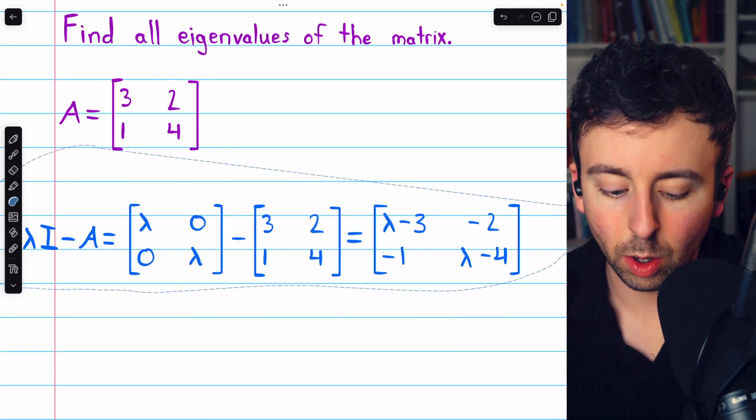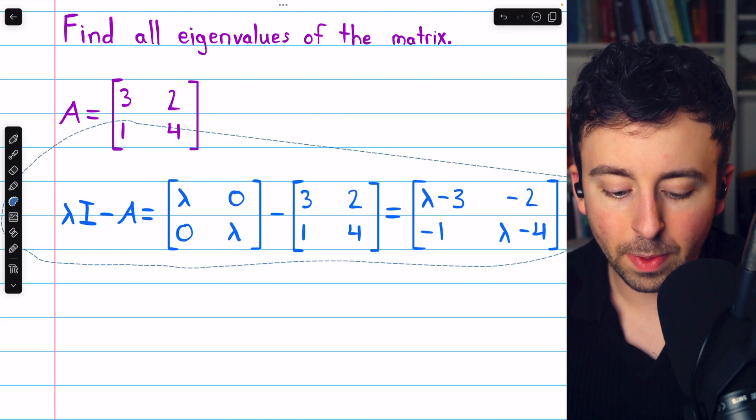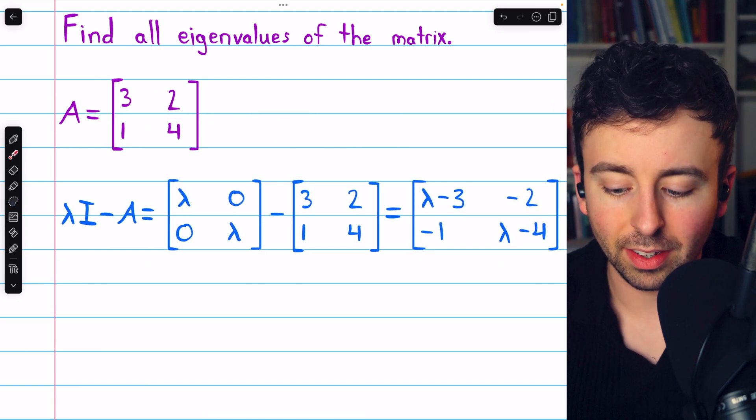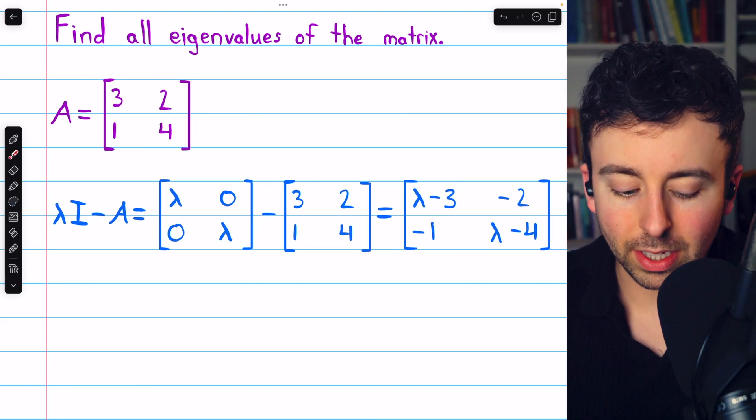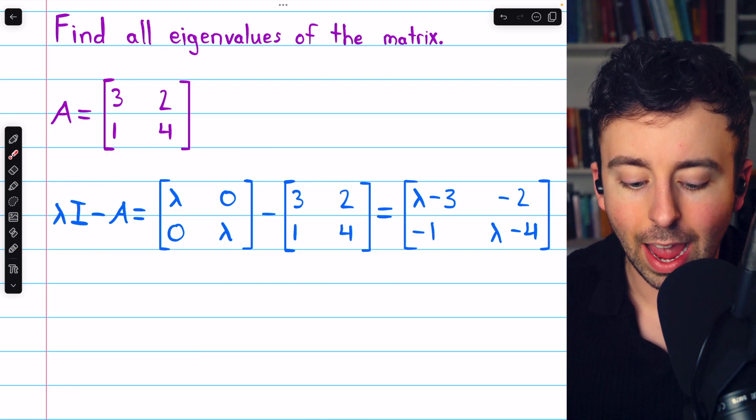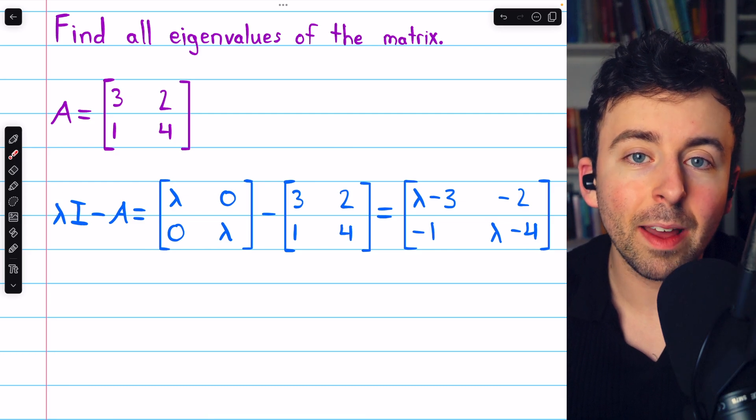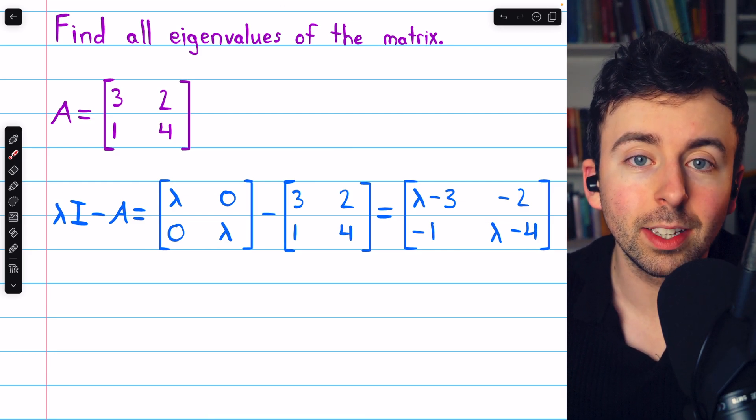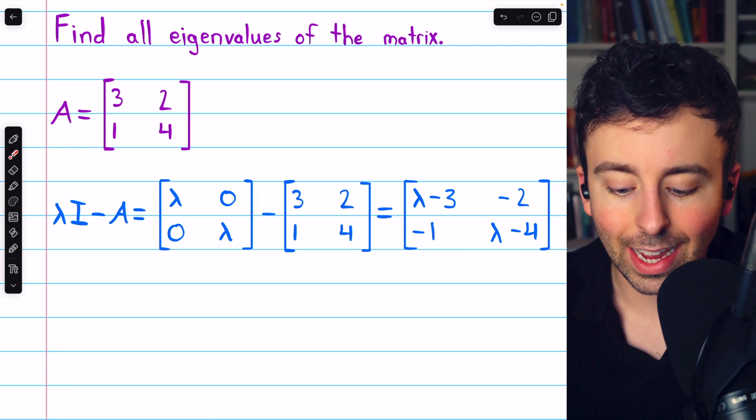Again, there's a link in the description to the lesson where we introduce this stuff for the first time, but let's jump into the process of actually doing it. So the key character is this guy here, lambda times the identity minus our matrix A. So first we'll calculate that, and then we'll calculate the determinant, and then we'll be able to find the eigenvalues.